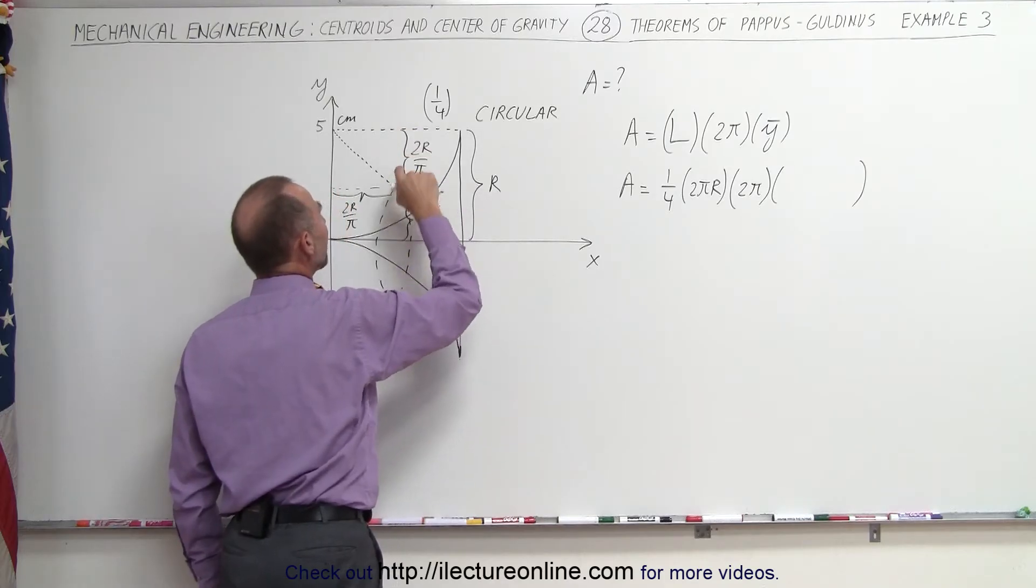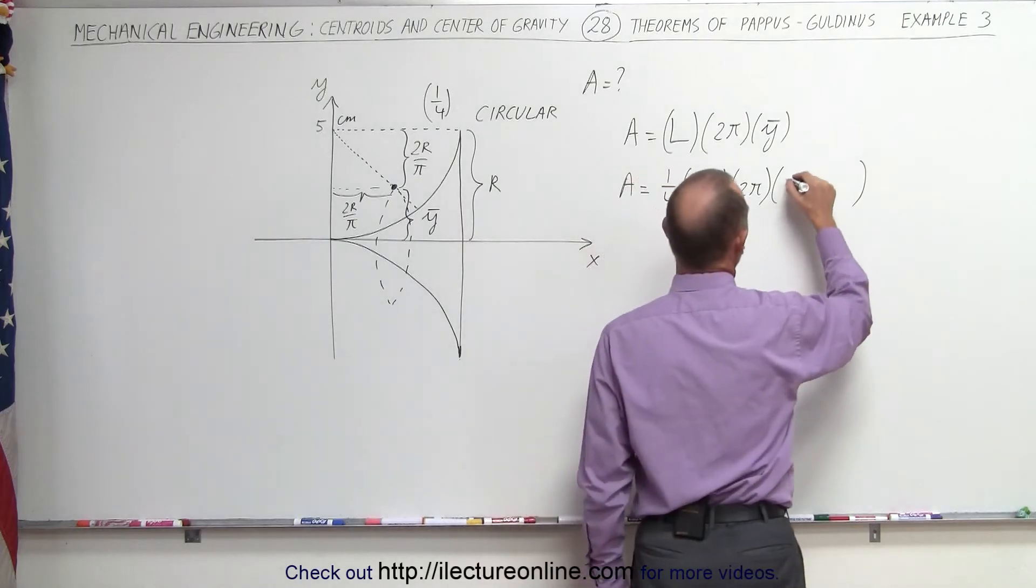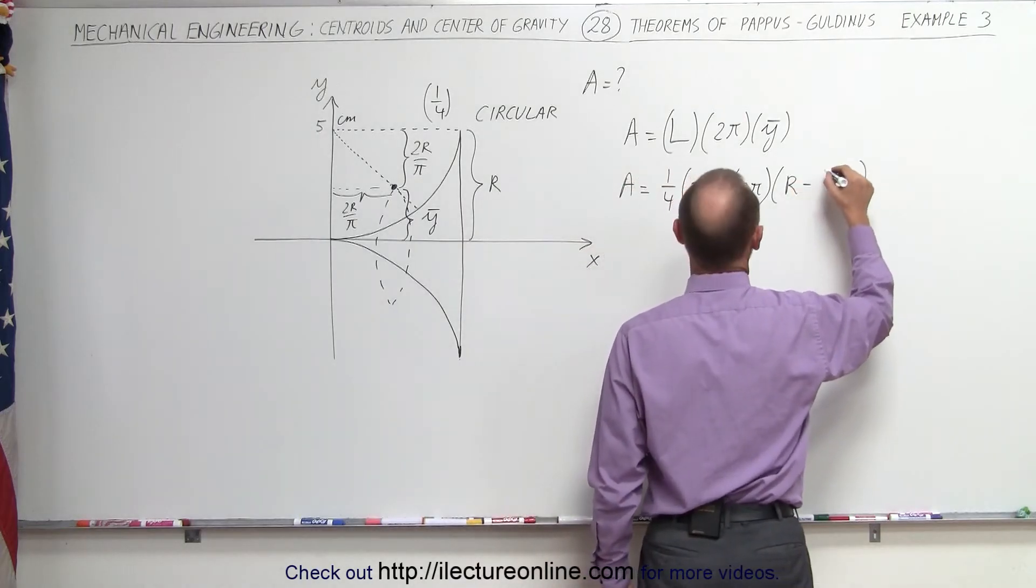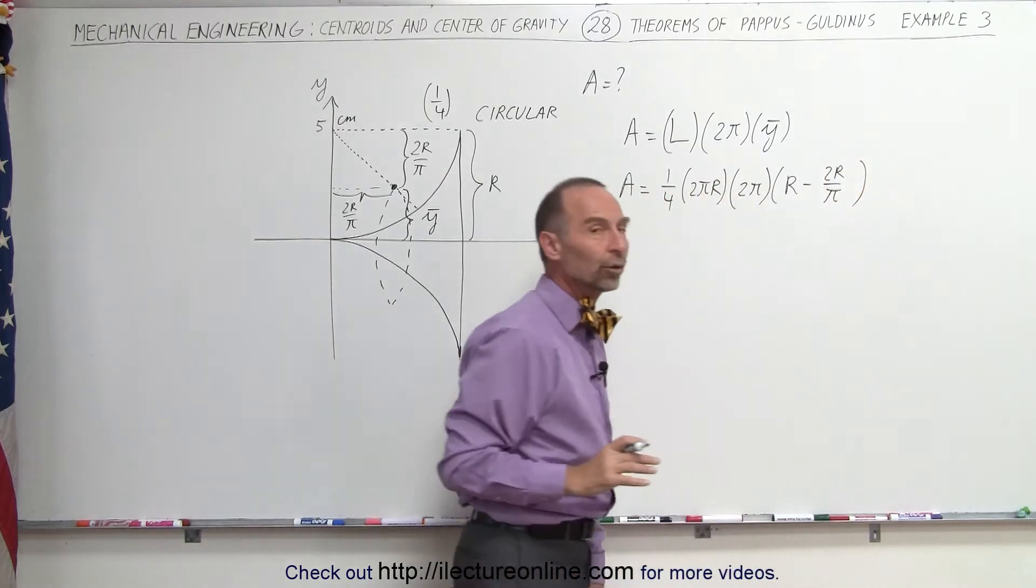So r minus this distance which is 2r divided by π. So this will be r minus 2r divided by π. That is the y-coordinate of the centroid.